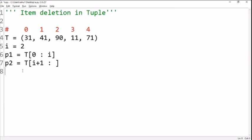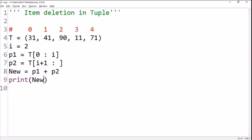Then you add the two parts and print the new tuple to check the result.